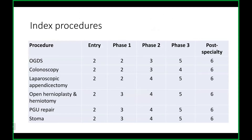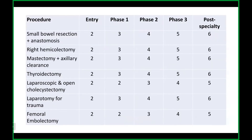These are the index procedures we expect you to do. Most of you should now be in Phase 3. Procedures like OGDs, colonoscopy, laparoscopic appendectomy, and hernia repair — you shouldn't have any problem. For procedures like PGU repair, stoma, small bowel resection, right hemicolectomy, mastectomy, and thyroidectomy, these should be performed independently. Things like left hemicolectomy and open colectomy should still be performed with some supervision.